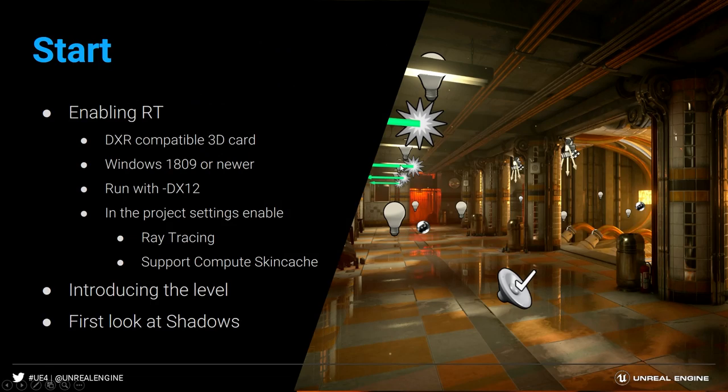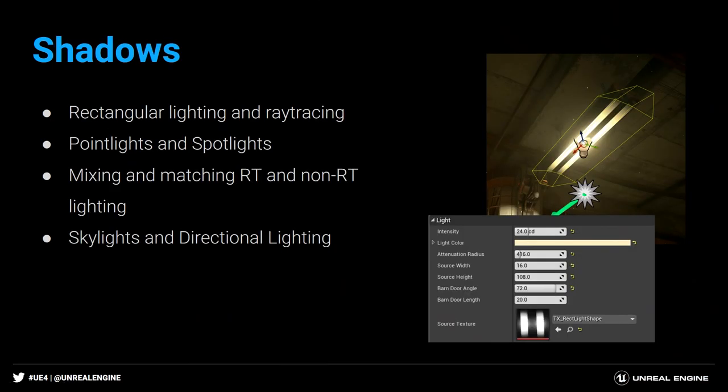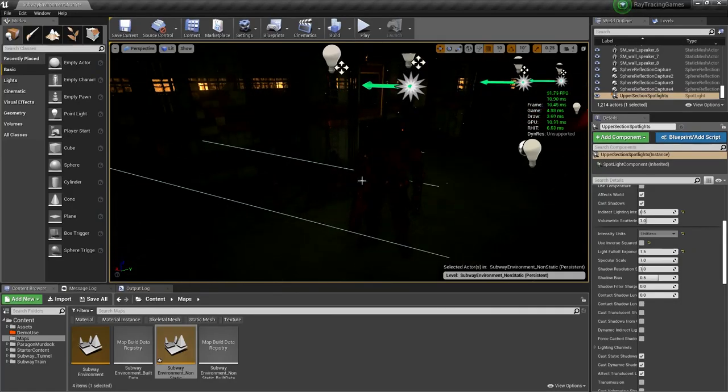This brings us to rectangular lights, which we added around Unreal Engine 4.18, about a year ago when we did the first version of ray tracing. We completely rewrote that, by the way — that's why it took a year for this to get re-released. So this is version two. Rectangular lights have been in the engine for a while, but they never fully worked, because to do rectangular lights well you need ray tracing — you can't calculate their shadows otherwise.